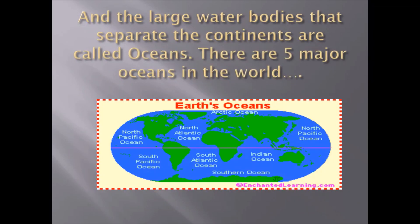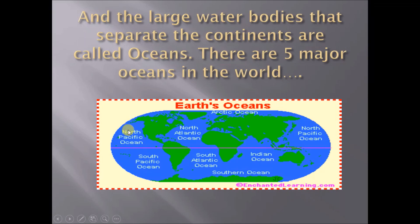The large water bodies that separate the continents are called oceans. There are five major oceans in the world: the Pacific Ocean, Atlantic Ocean, Indian Ocean, Arctic Ocean, and Southern Ocean.